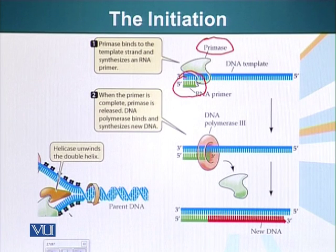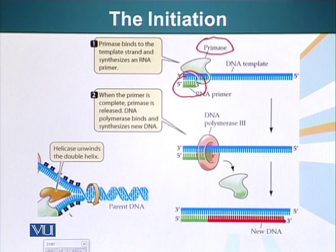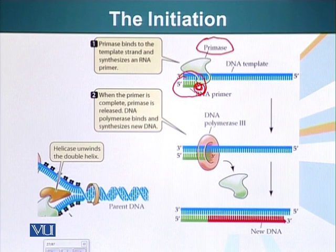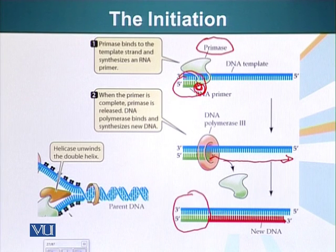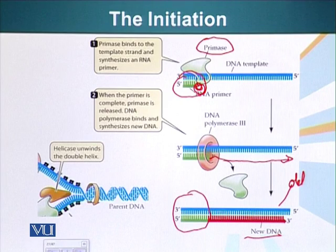The next requirement is that we can now extend this little primer and form the new DNA molecule. That is done by a type of DNA polymerase called DNA polymerase III. As we know, DNA polymerase can only synthesize a DNA strand from 5 prime to 3 prime end. Notice that there is a 3 prime hydroxyl available here. DNA polymerase settles on the DNA-RNA hybrid and extends the 3 prime end, and the new DNA molecule is made. This process results in part of the DNA being a DNA-RNA hybrid, with the old DNA strand and the newly formed complementary DNA strand.